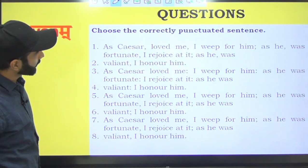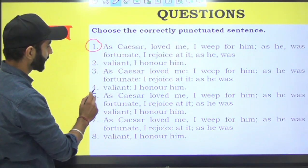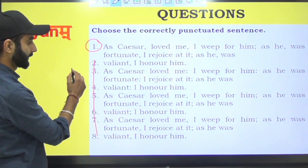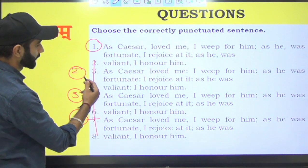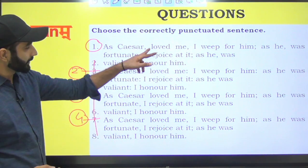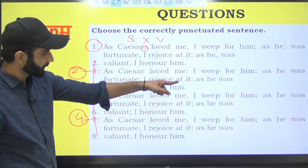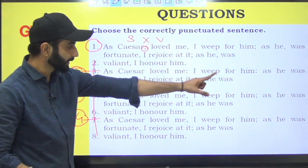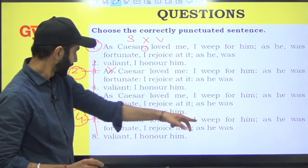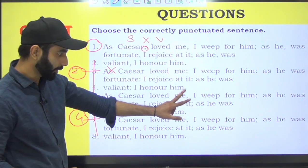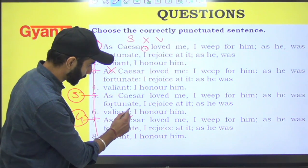Choose the correctly punctuated sentence. Ignore the bullets. This is one, two, three, and four. As Caesar loved me, comma after Caesar? No, this is subject and verb, no comma allowed. As Caesar loved me, I weep for him. No, again break here, so you can't put semicolon like this. As Caesar loved me, I weep for him. Okay. As he was fortunate, I rejoiced at it. Okay. Again break. As he was valiant, I honor him. Okay. This one is confusing, shouldn't be like this.